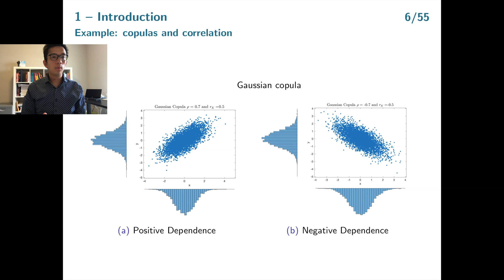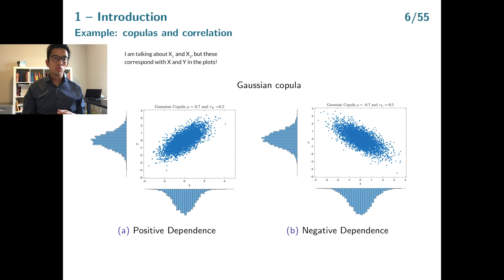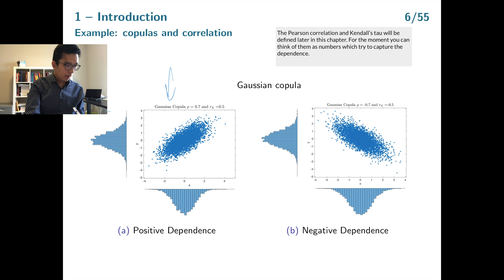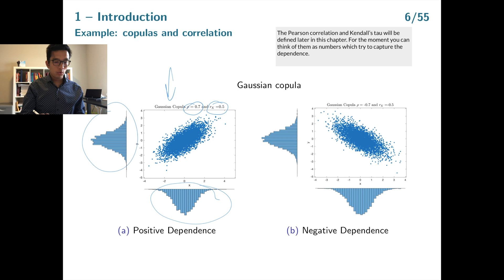Before we move to the theory on copulas, let me introduce a simple example to illustrate their importance. Assume you have two risks x1 and x2 denoting the returns of two different stocks. You can use the data of x1 to determine the empirical distribution of returns for stock 1, and do the same for stock 2. Then you measure the strength of dependence using the Pearson correlation or the rank correlation Kendall's tau. In situation A, we have marginal distributions for x1 and x2, a Pearson correlation of 0.7, and a Kendall's tau of 0.5.